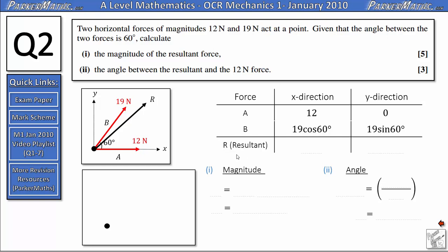Now we're going to find the components of the resultant force in the x direction and the y direction and all we have to do is add the separate parts. So here we've got 12 plus 19 cos 60. Well, cos 60 is a half and half of 19 is 9.5 and 12 plus 9.5 is 21.5.